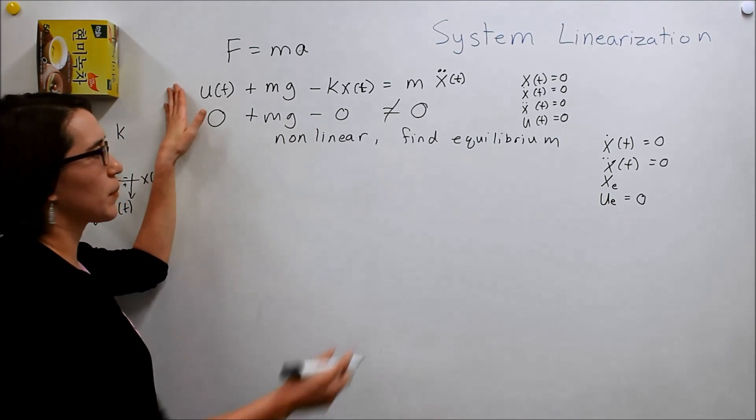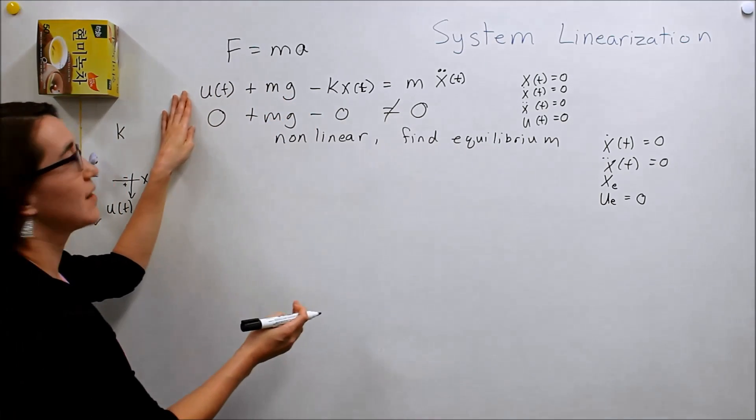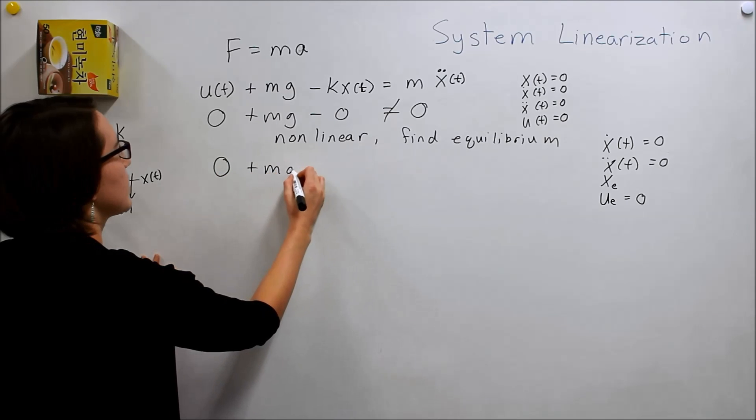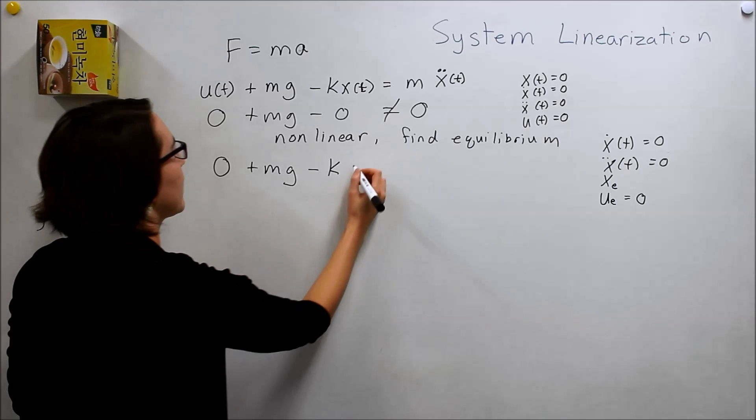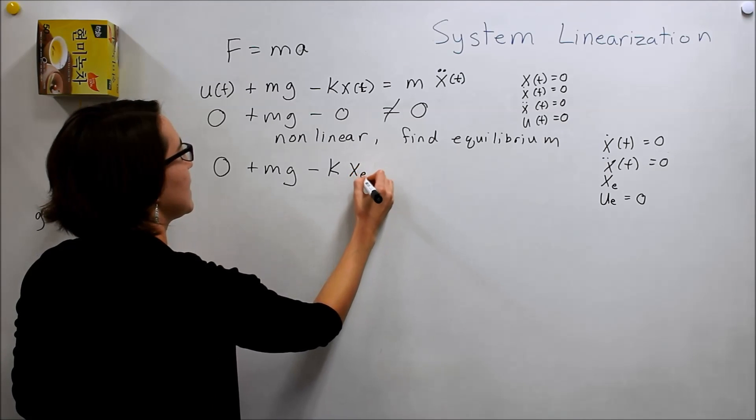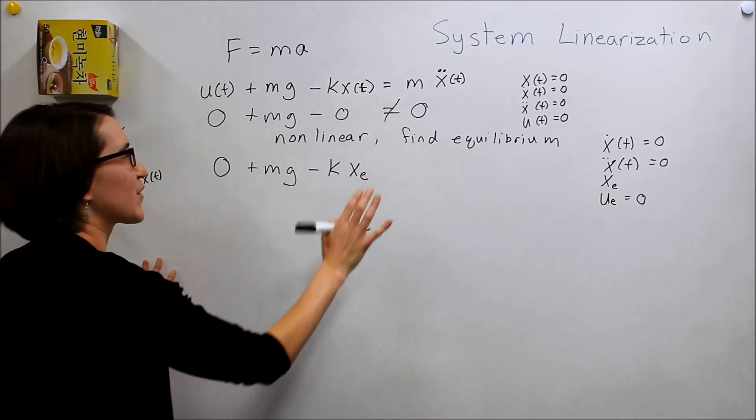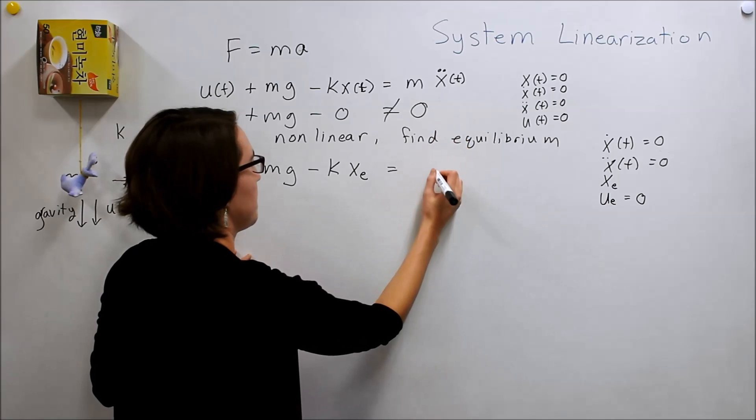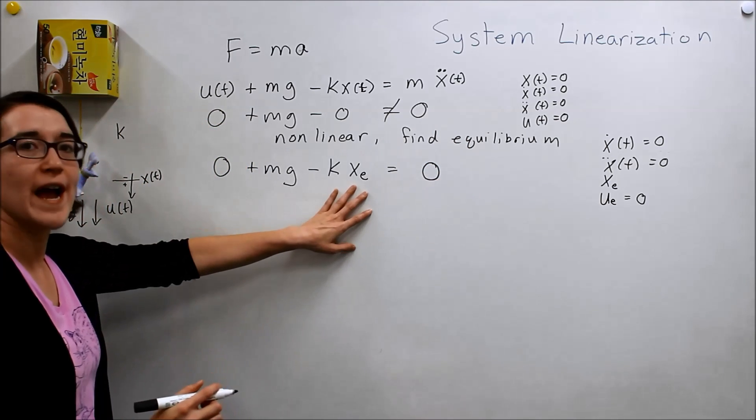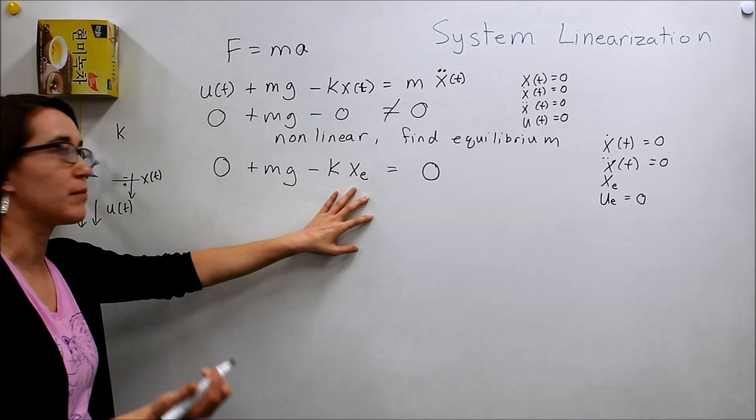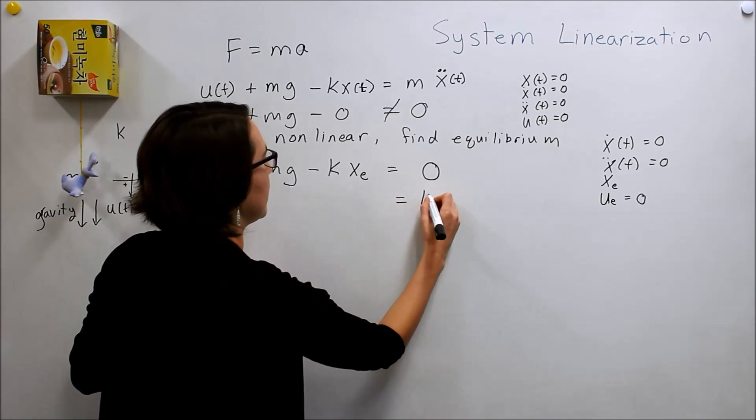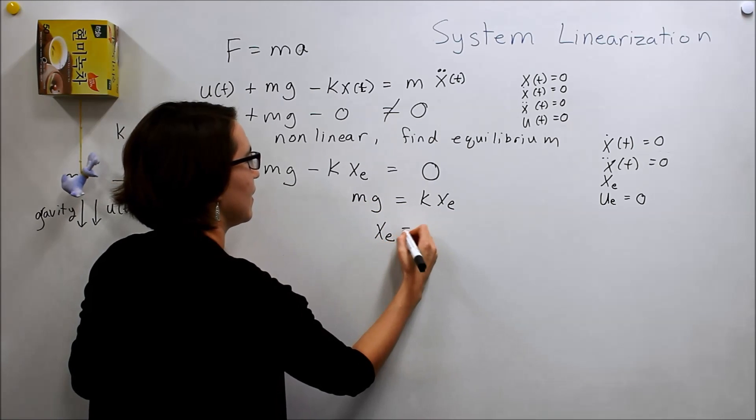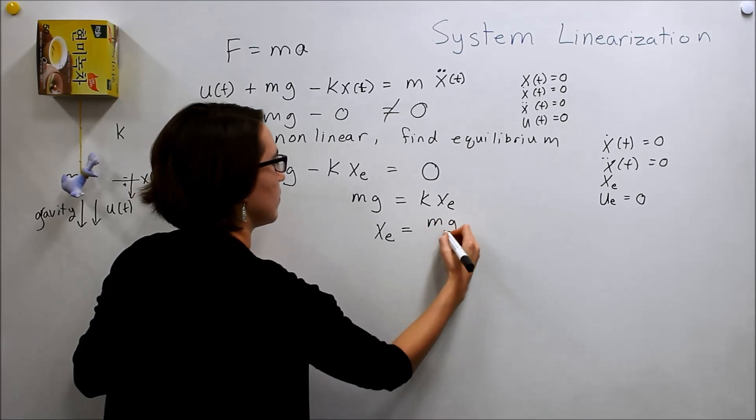So, we'll plug these, with these assumptions, plug it back into this equation. So, here our input is going to be zero. Plus mg. Minus k. And we want to find xe. I'm going to drop the t's for a little bit. And equals m times zero, right? So, now we can solve for xe. And that will be our equilibrium position.